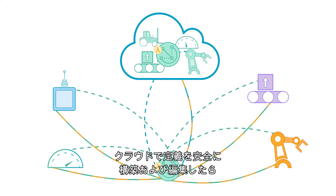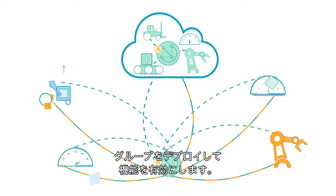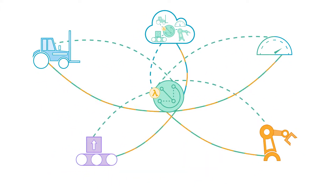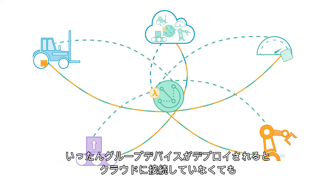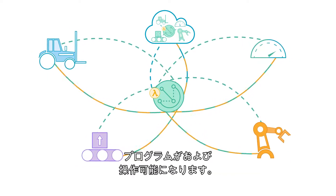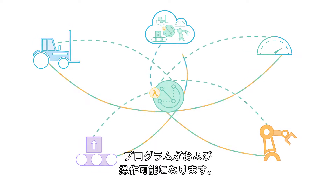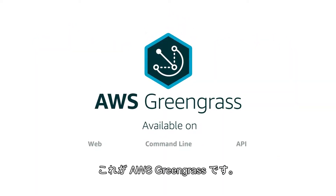Build and edit your definition safely in the cloud, and then deploy your group to make it functional. Once deployed, your group's devices and programs can communicate and react even without a connection to the cloud. That's AWS Greengrass.